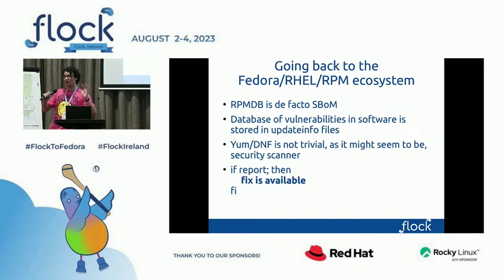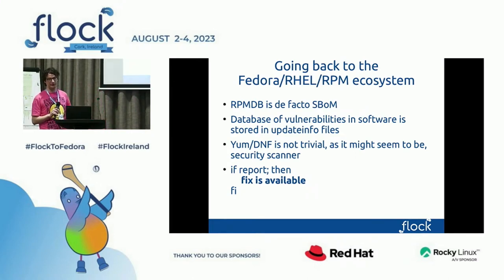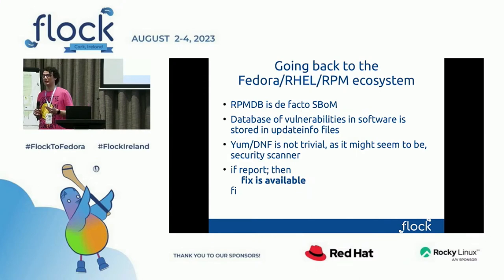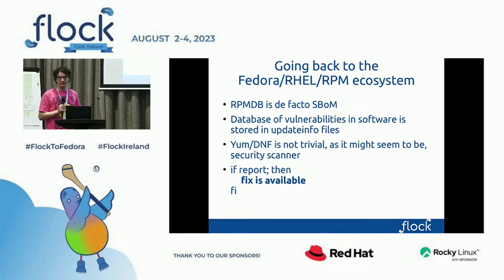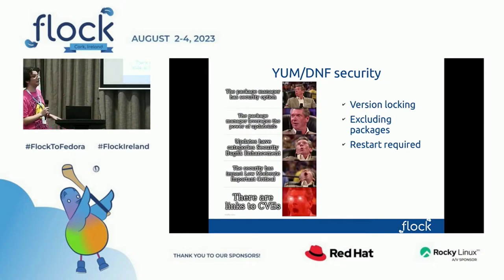Going back to the Fedora RPM ecosystem: when you think about it, the RPM database is de facto a Software Bill of Materials. The database of vulnerabilities is stored in the update info files. YUM and DNF is not a trivial security scanner as it might seem. The thing that I like the most is that if there is a report, there is a fix available. So it's very natural for people in system administration and DevOps to just use DNF security, which leverages the power of update info.